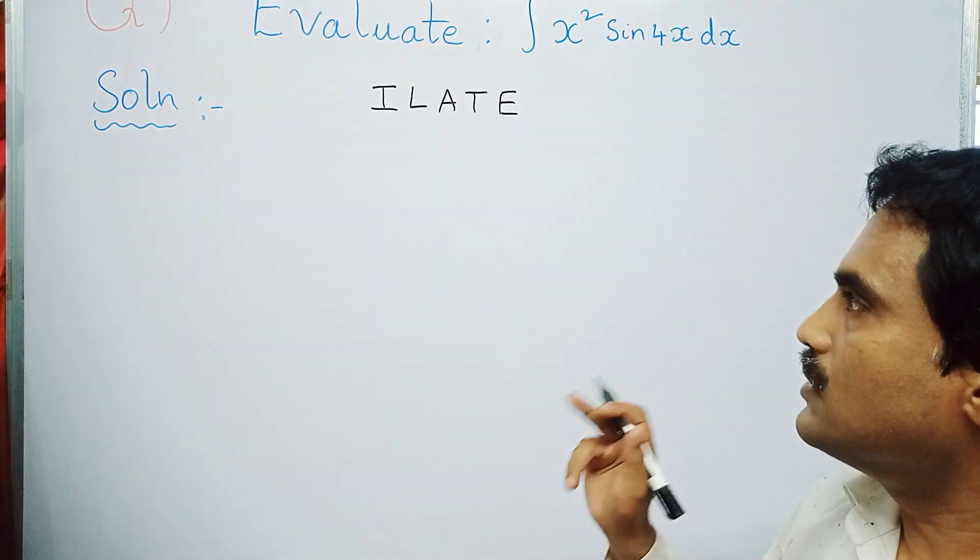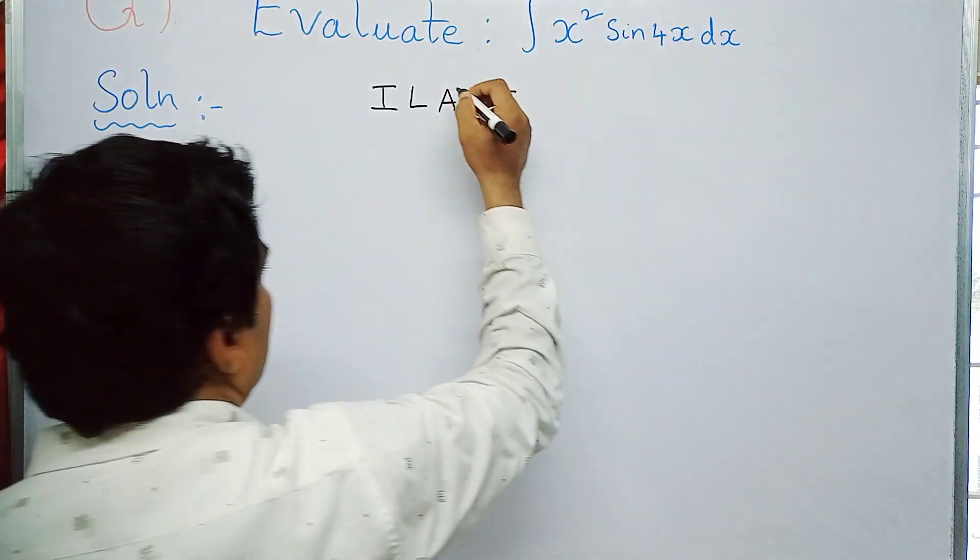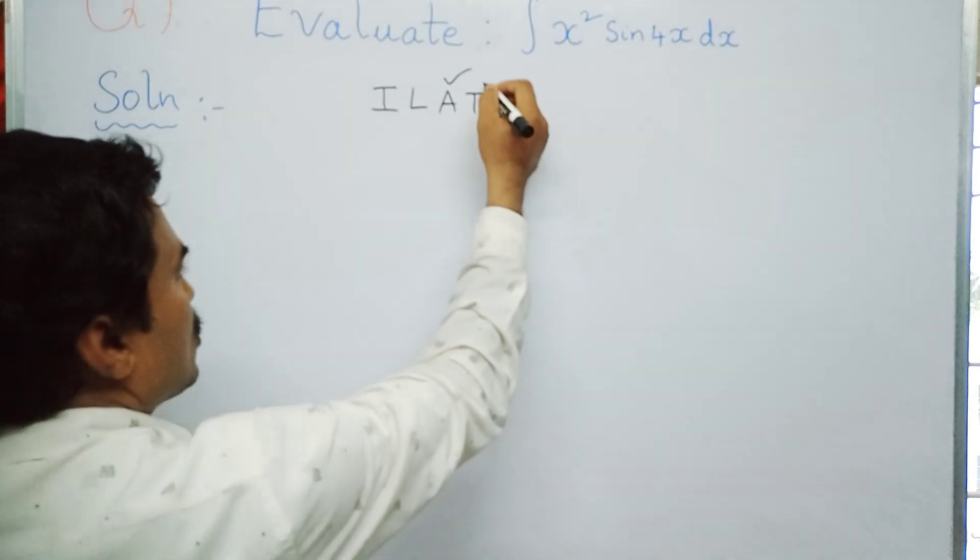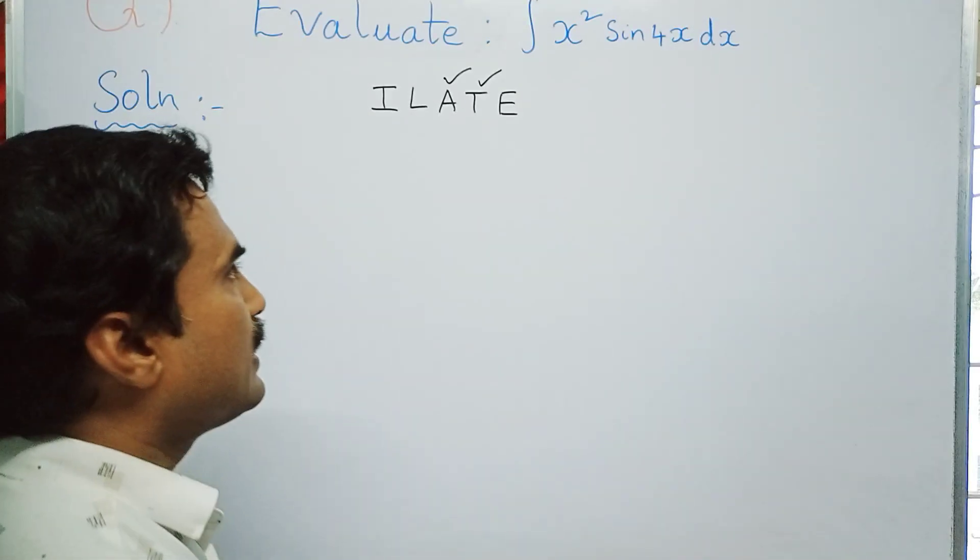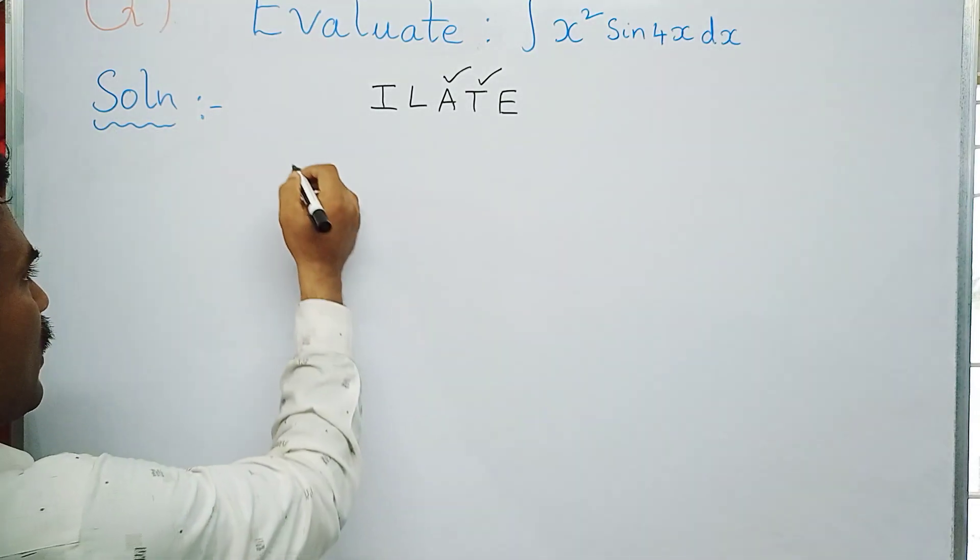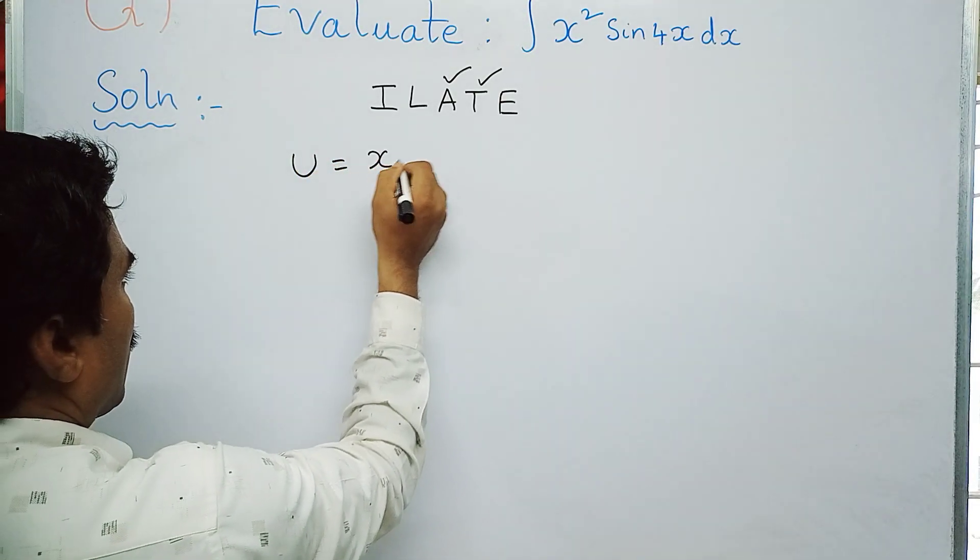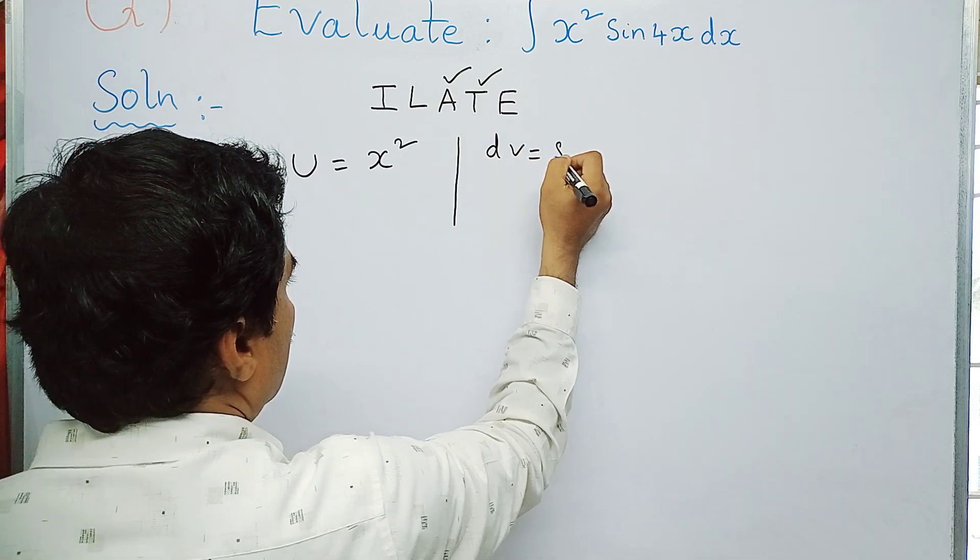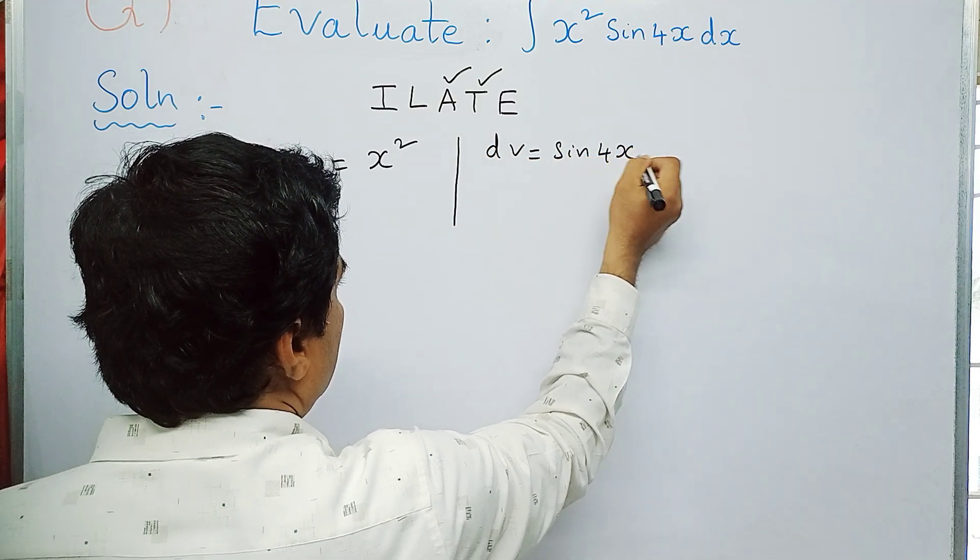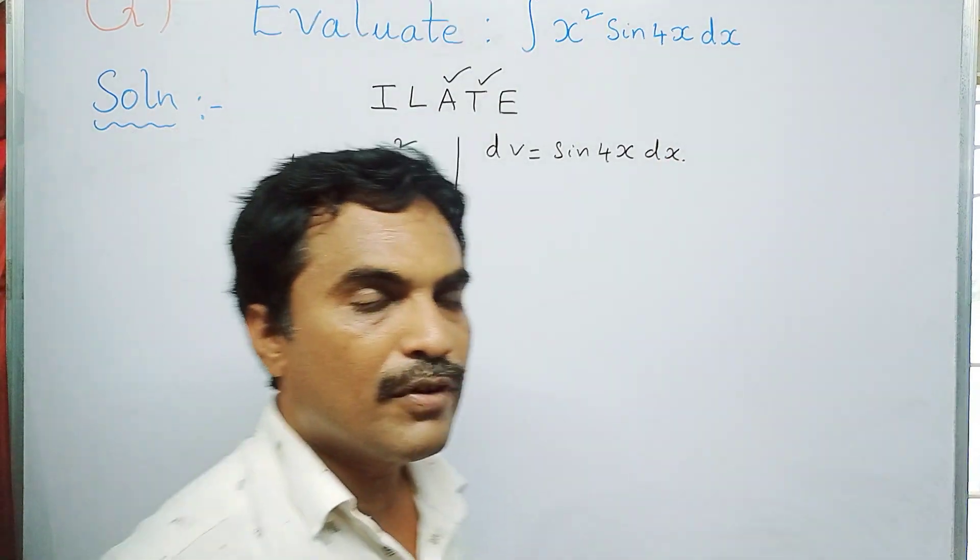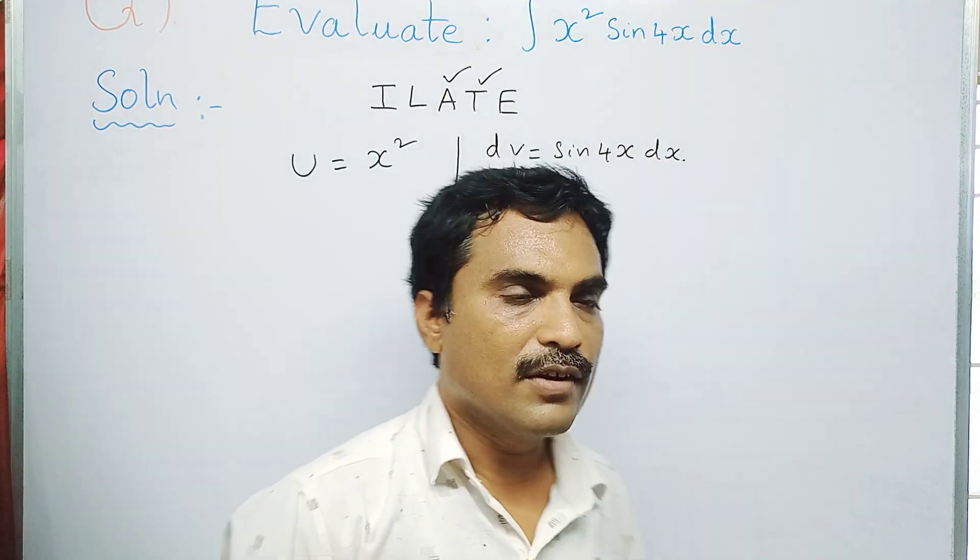Since A comes first, that should be taken as u. So u equal to x square. Another function should be taken as dv, so dv equal to sine 4x dx. Now here, left hand side, we have to differentiate this u up to constant.